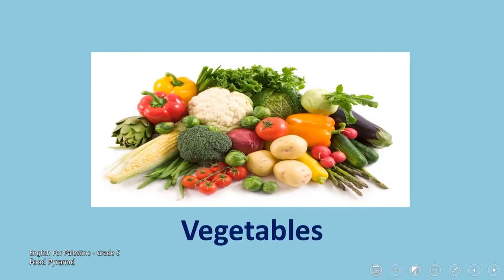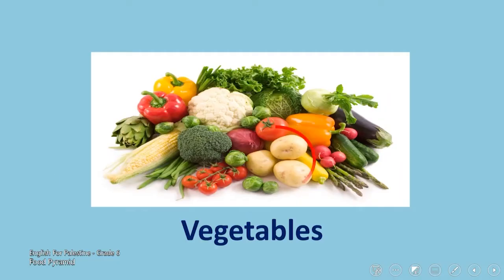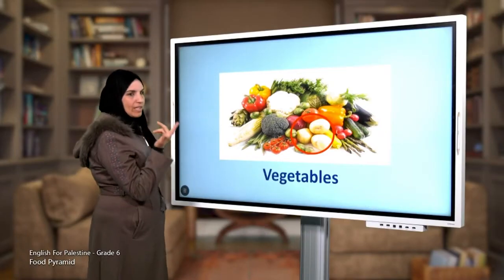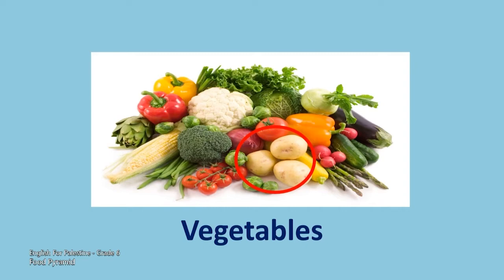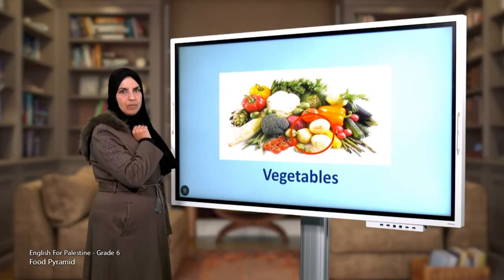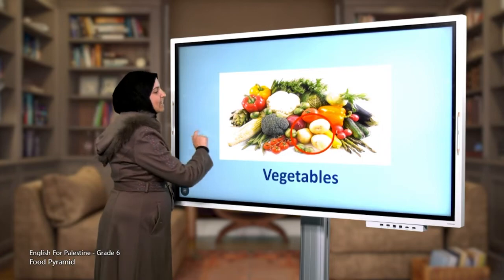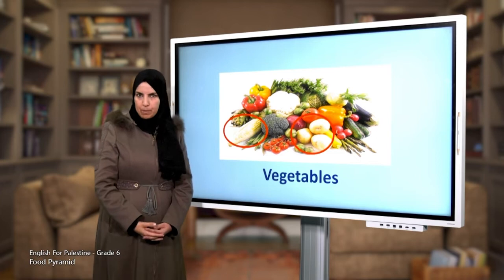What can you see in this picture? Excellent — potatoes! Where are the potatoes? Great. Now what else can you see? What is the name of this vegetable? Great, it's corn.